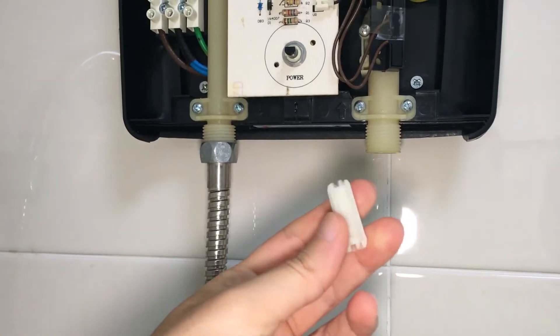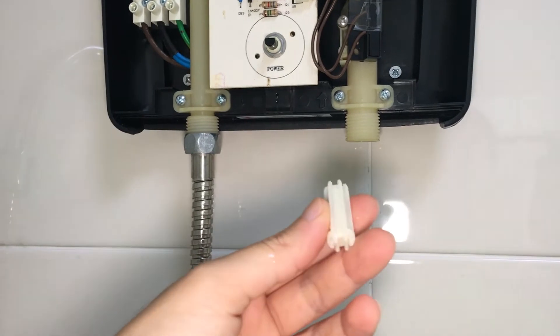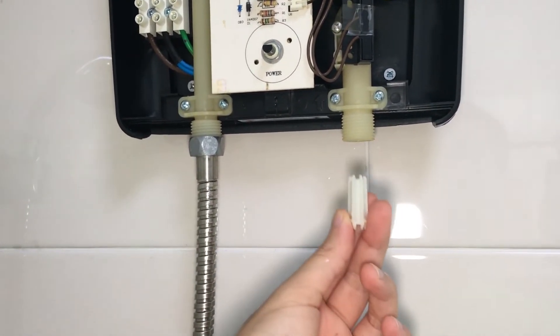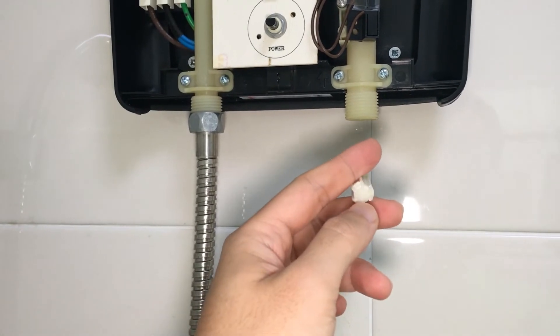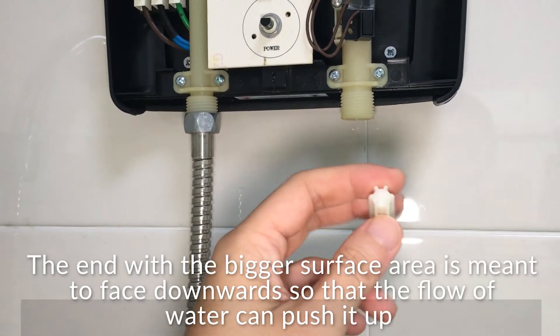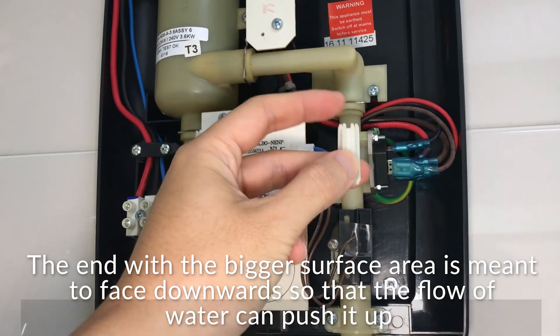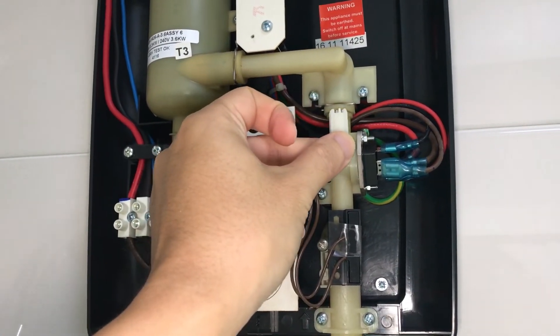So when replacing the magnetic float, we want to make sure that it's in the right orientation. It's this way, this way, this way in. This is so that the water can push the float upwards while not inhibiting the water flow as it reaches the top.